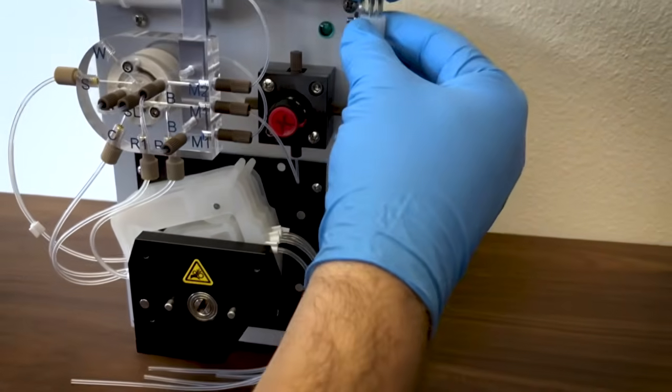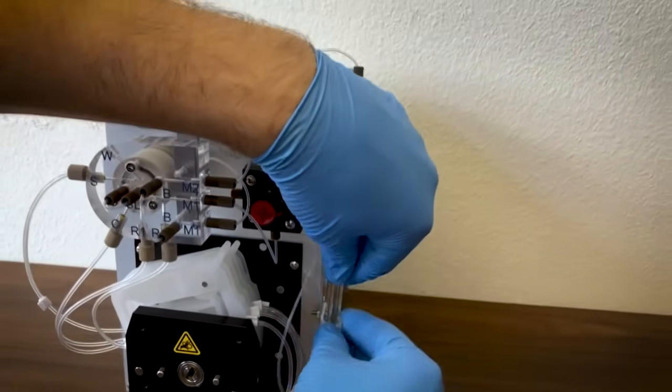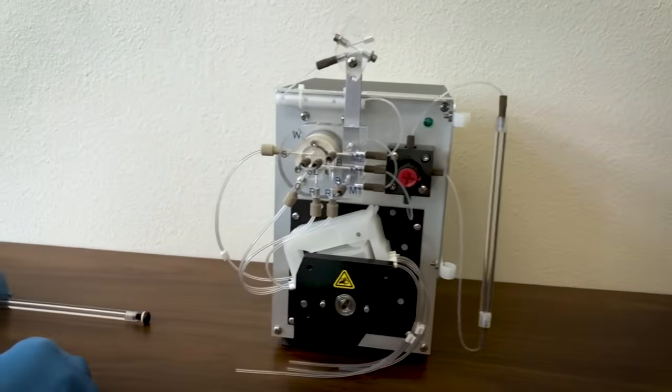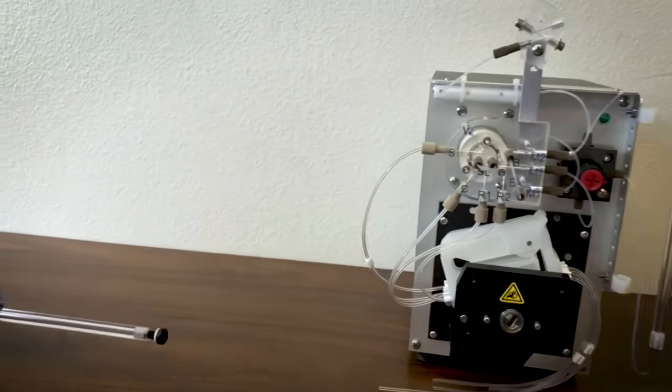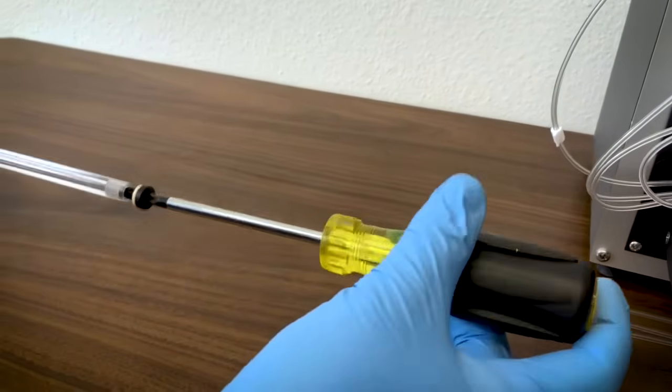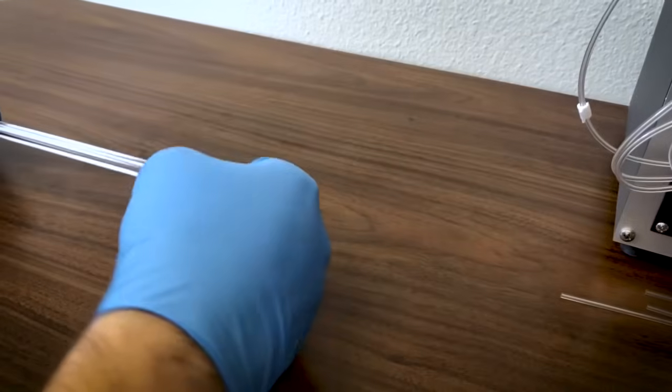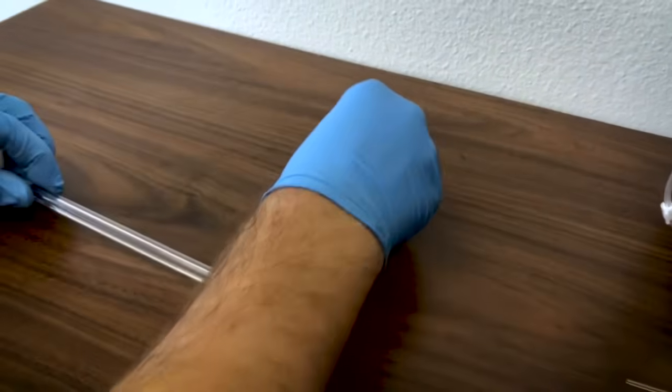Remove the column from the clips. On the new column, remove the plug from one end. The caps on the ends are screwed in very tight, so you may need a screwdriver to get them loose. Try to keep the column level to avoid any buffer leaking out.